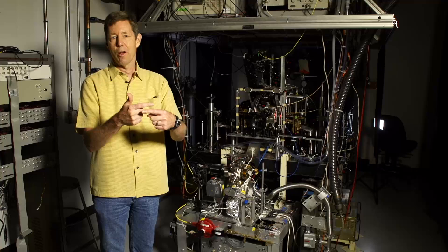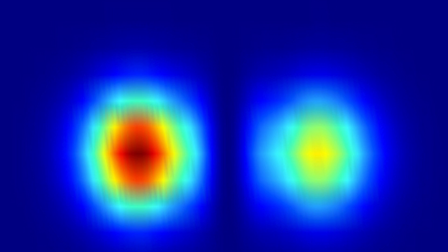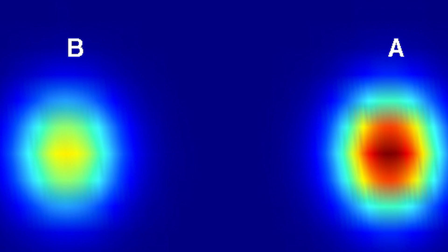It looks like the solitons bounce off of each other, but in fact they do go through one another, and we could see that by making one smaller than the other. We can see, in fact, the small one started here, and it ends up over there.